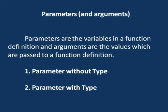Parameters: parameters are the variables in a function definition, and arguments are the values which are passed to a function definition. There are two types: parameter without type, and parameter with type.